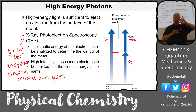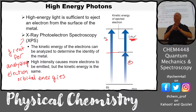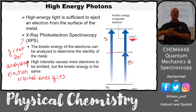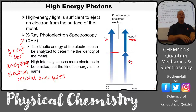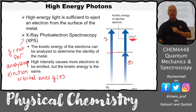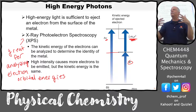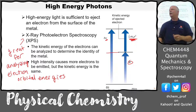XPS is covered in section four of the course, so don't forget about it. It's introduced here as the photoelectric effect — you hit the material with light and electrons come out. By measuring the kinetic energies of all the electrons, you can get a picture of all the different orbitals in the substance.